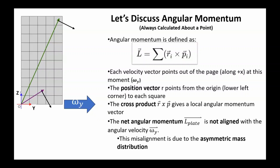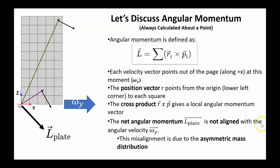Angular momentum is always calculated about a point, while moment of inertia is calculated about a line. The formula for angular momentum is r × p, where r is the position vector and p is the momentum vector. Imagine a plate rotating about its y-axis with angular velocity ω. We break the plate into small squares and sum their individual angular momenta. When the plate rotates out toward us, each square's velocity points out of the page, and r × p gives the local angular momentum vector. Summing all contributions, the net angular momentum is not aligned with the angular velocity — this misalignment is due to the asymmetric mass distribution.